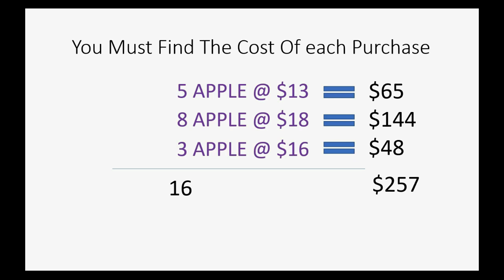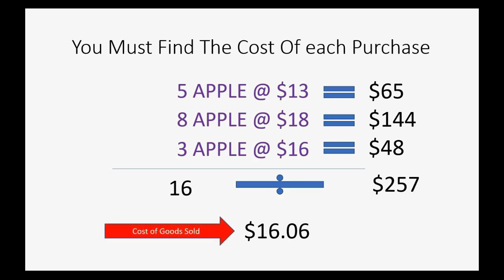All those apples together cost two hundred fifty-seven dollars, and there are sixteen of them. Dividing two hundred fifty-seven by sixteen gives sixteen dollars and six cents — that is the weighted average cost per unit. It would be sixteen dollars and six cents multiplied by the quantity sold to find cost of goods sold for that particular sale.